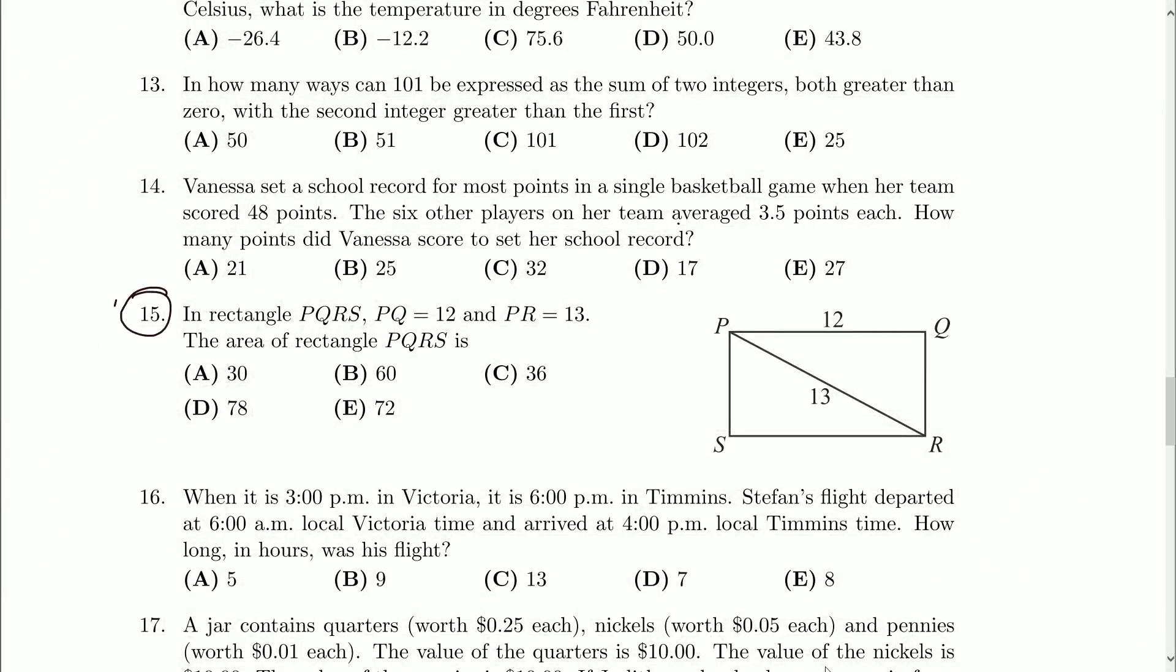In the rectangle PQRS, PQ is 12, PR is 13. Now as soon as I see numbers like that I start to get suspicious. 13 and 12 on a triangle, you know like this triangle here, that makes me very suspicious. I'll get into that in a moment, but what's the question actually asking us for? We just want the area of this rectangle.